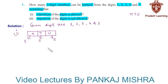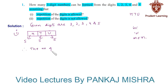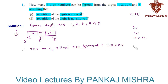From the fundamental principle of counting, if an event can occur in m different ways following which another event can occur in n different ways, then the total number of occurrences is m into n. Therefore, the number of three-digit numbers formed is five into five into five, that is 125.